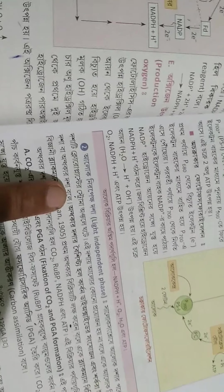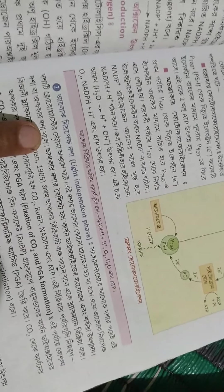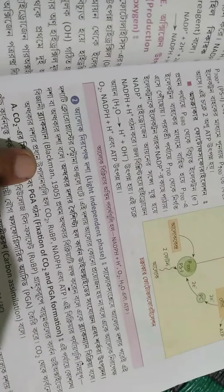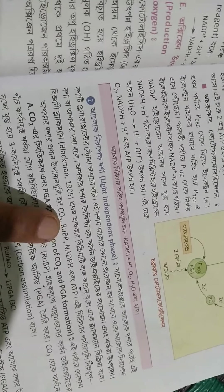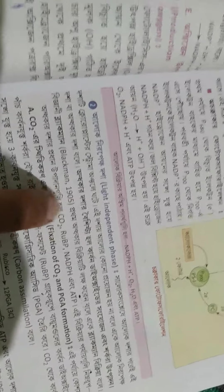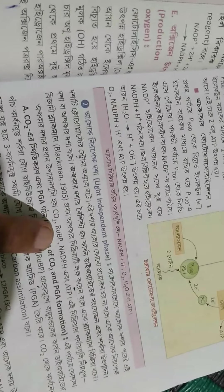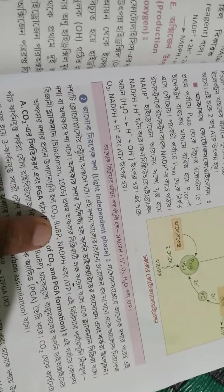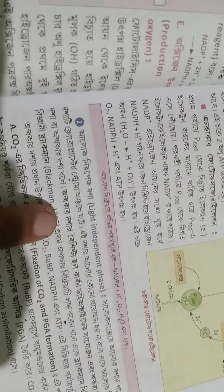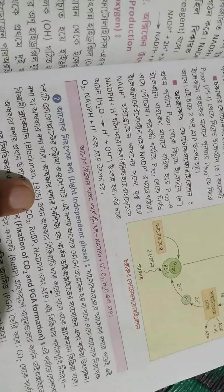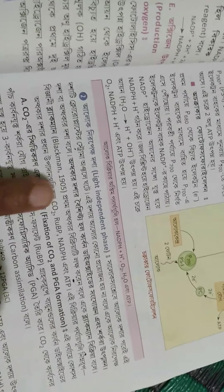If we discuss about the dark reactions, or the light-independent phase — because it will not depend on light, that is why it is named so — it will happen in the stroma region of the chloroplast. The features are that it will generate RuBP. The main products are: carbon dioxide is fixed, RuBP will be restored, NADPH will be used, and ATP will be consumed. In 1905, Blackman observed this light-independent reaction, so it is called the Blackman reactions.